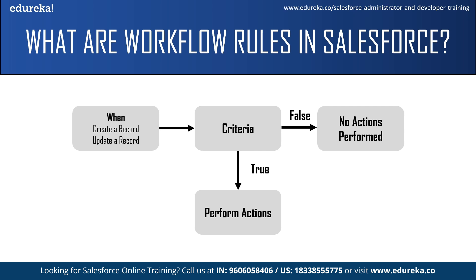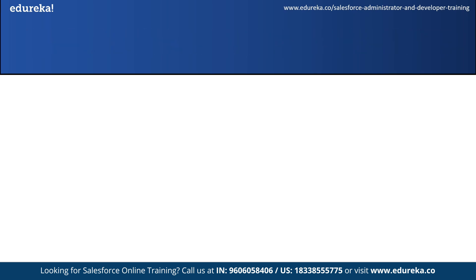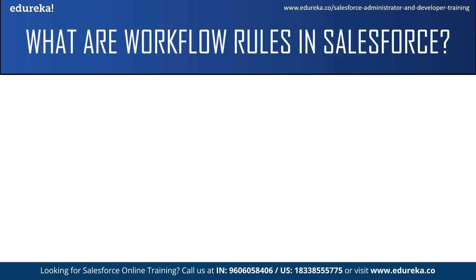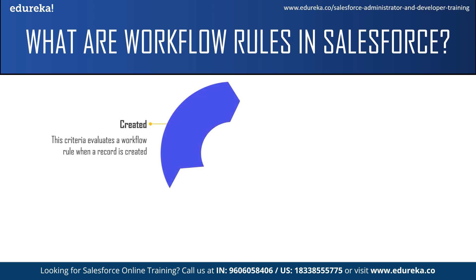There are three criteria which define when the action should run. The first one is 'when created' — this evaluates a workflow rule when a record is created. When a record is created, it checks for the rule criteria, and only when the rule criteria is met does it then perform the automated action. Using this option, the rule runs only once.